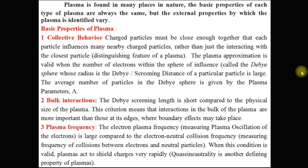The next basic property is bulk interactions. The Debye screening length is short compared to the physical size of the plasma. This criteria means that interactions in the bulk of plasma are more important than those at its edges, where boundary effects may take place.